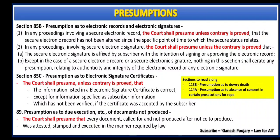While reading the 'shall presume' sections, two other sections to keep in mind are section 113B which discusses about presumption as to dowry death, and section 114A which discusses about presumption as to absence of consent in certain prosecutions for rape. I will cover these sections when I reach there. But for now, just know that in these two sections also, the 'shall presume' continues. That's all about the 'shall presume' clauses under the documentary evidences.